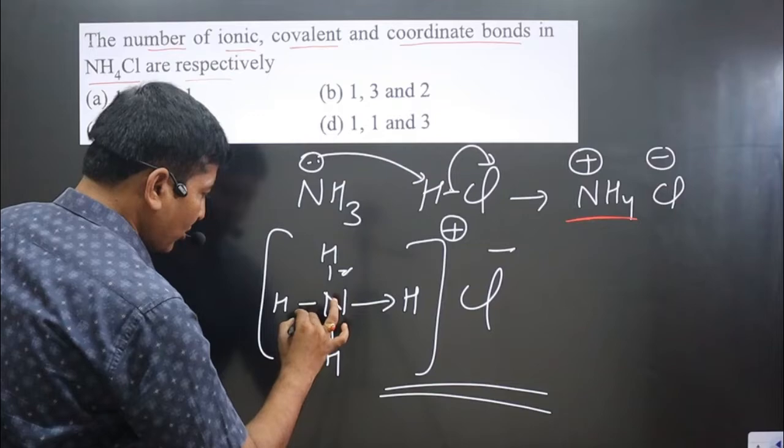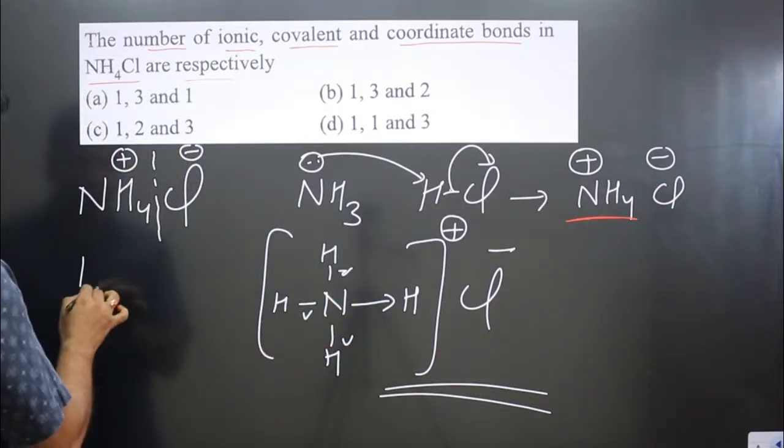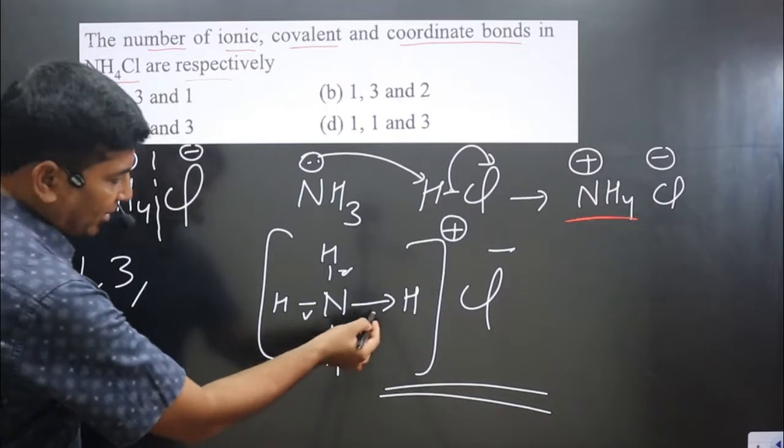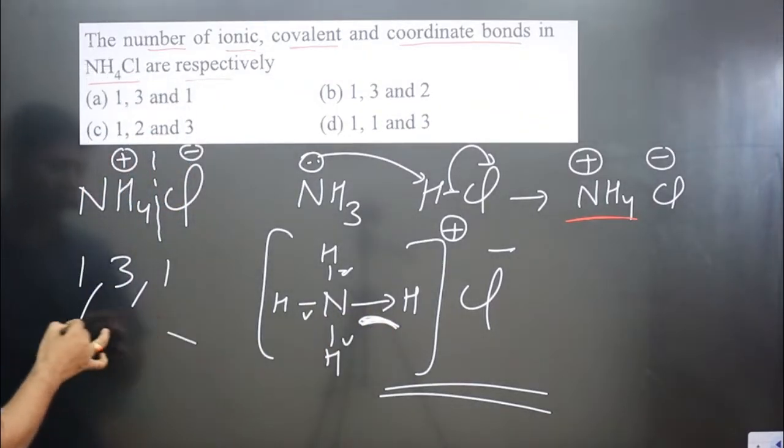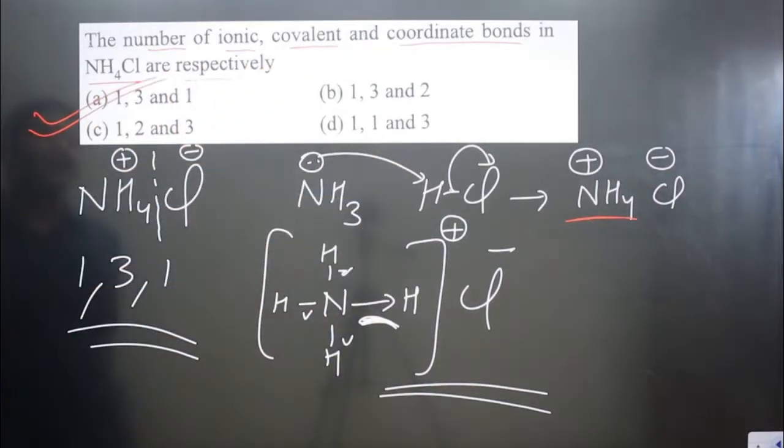Covalent bonds - how many covalent bonds are there? Three covalent bonds. And this is the coordinate bond - one coordinate bond. One ionic bond, three covalent bonds, and one coordinate bond: one, three, one. You can see in the first option we have one, three, one. Option A is correct.